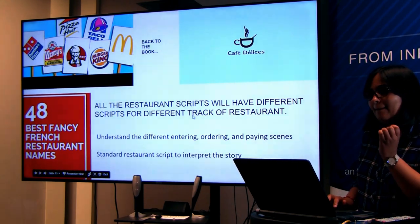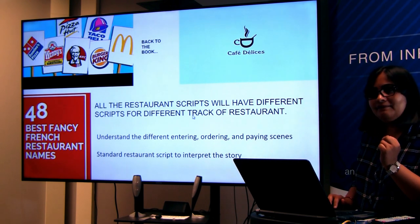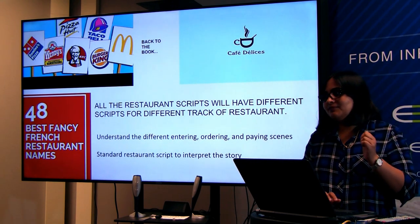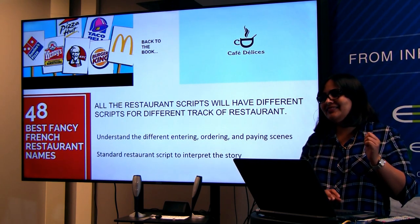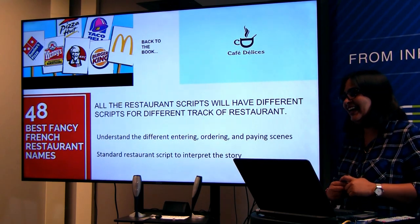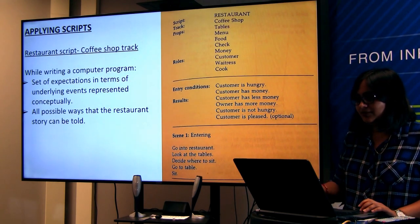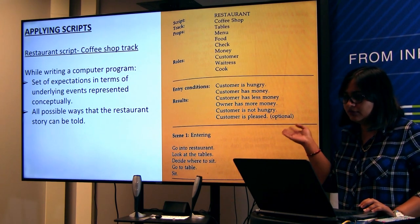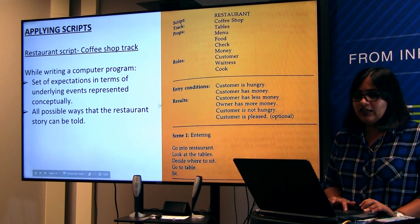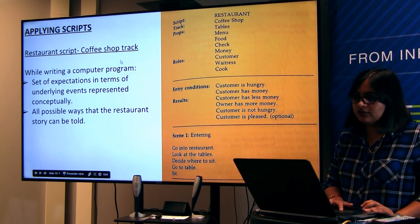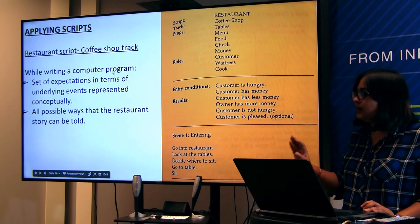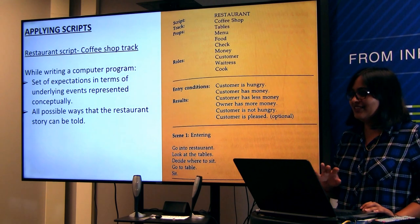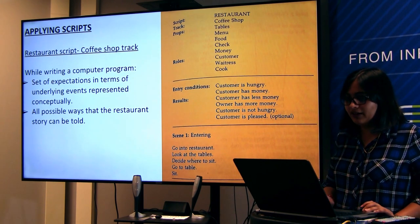The professor jokes: where does this end? Your brain is crowded! This is the example from the book — I took a screenshot. Applying scripts: restaurant script, coffee shop track. We are not on the Domino's track or French restaurant track. This example is about the coffee shop track. While writing a computer program, we need to give the set of expectations in terms of underlying events represented conceptually.